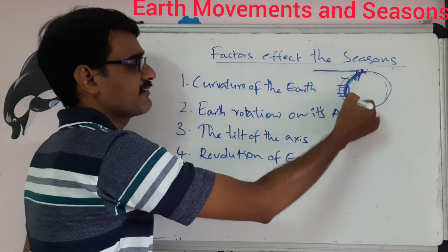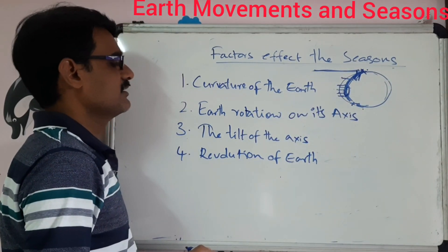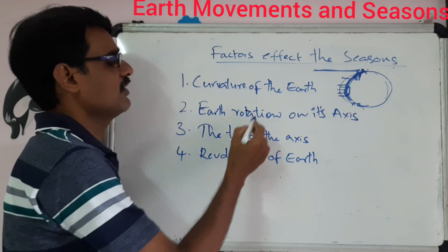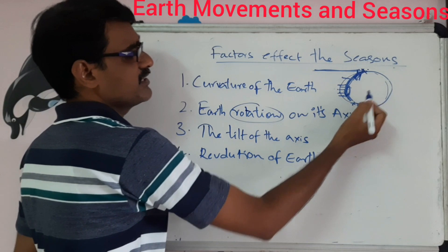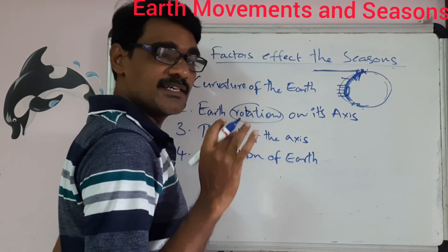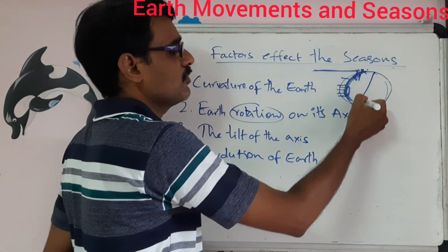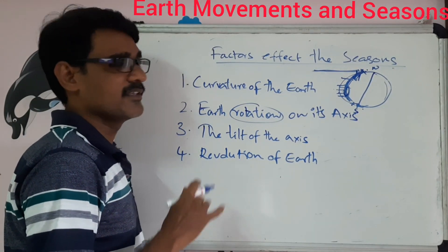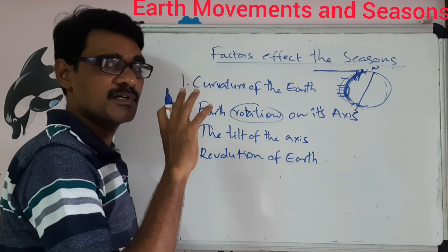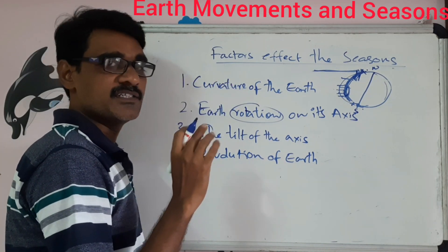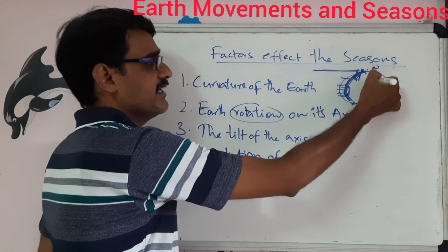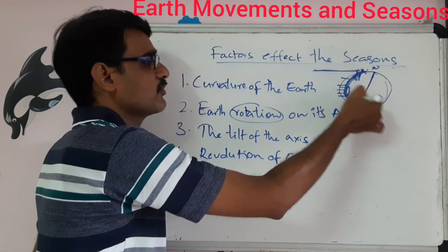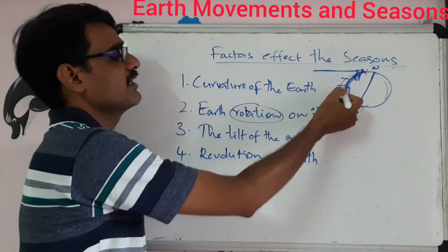The second factor is earth's rotation. Earth revolving on its own axis is called rotation. The axis is an imaginary line which joins the north pole and the south pole — there is no real axis. The earth rotates like a spinning top on this imaginary axis.